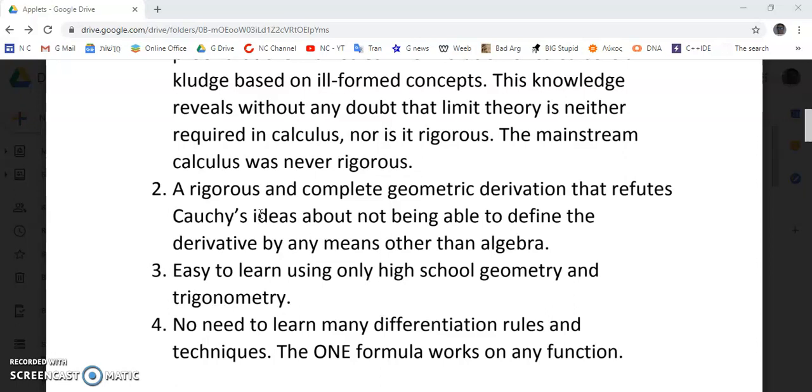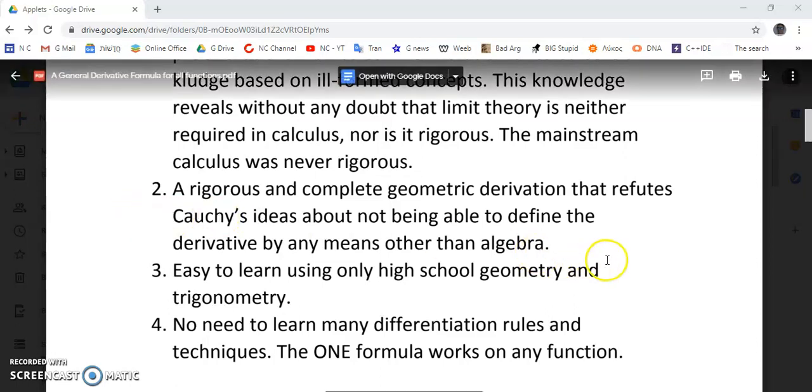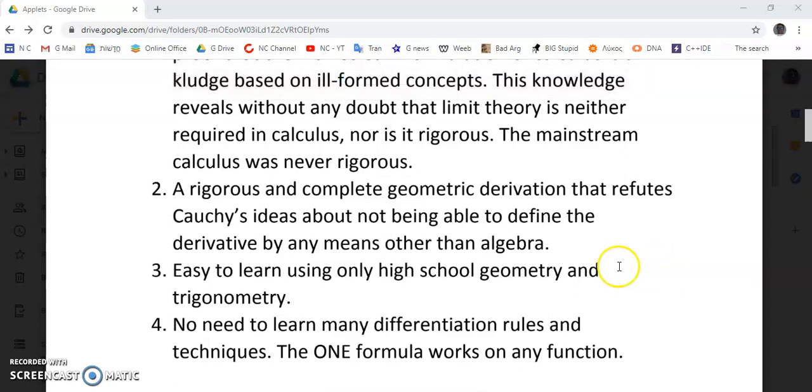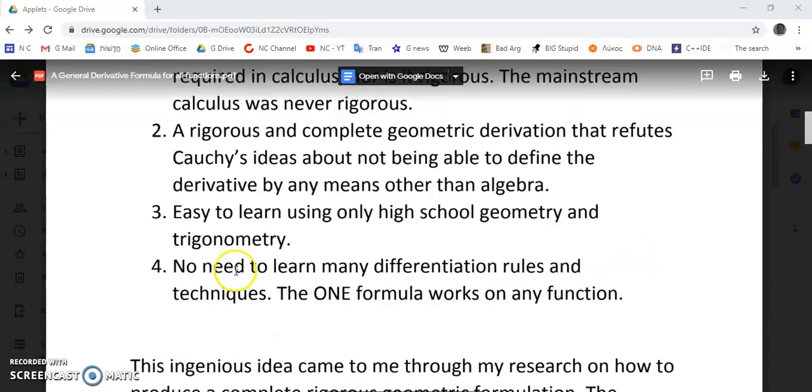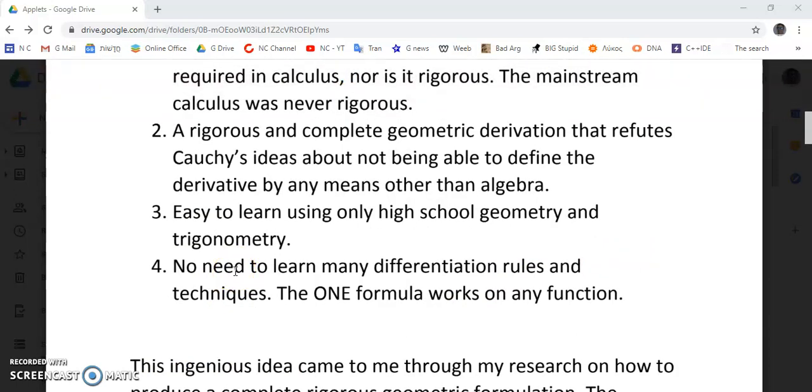And it's a rigorous and complete derivation that refutes Cauchy's ideas about not being able to define the derivative by any other means than algebra. So you can learn it using high school geometry and trigonometry. Trigonometry is really just specialized geometry - you don't have triangles unless you have circles, that's where trigonometry comes from. And if you can't see that, read my free ebook - download my free book called An Introduction to the Single Variable New Calculus and it will explain all those things in there.